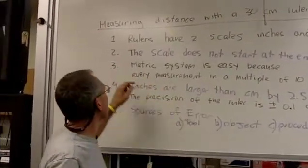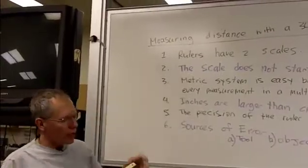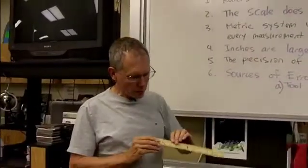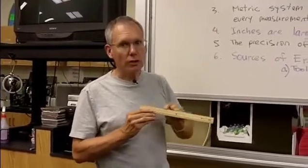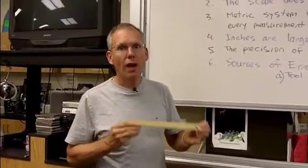So, we'll start from number one. Rulers have two scales. Centimeters on one side and inches on the other. They're not the same.